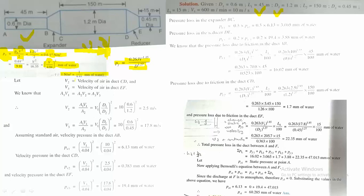We need to find the losses. We know the pressure at F — that is atmospheric pressure, so gauge pressure is zero there because it is open to atmosphere. If we deduct the losses from F back to A, we can find the static pressure at that location. Let us first find out the losses.